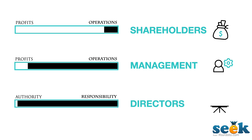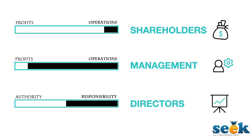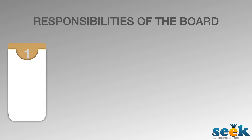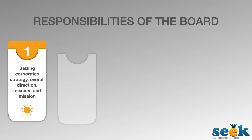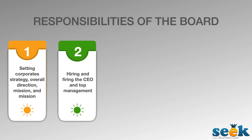Directors have the authority to establish corporate policies and ensure the implementation of the same responsibly. The board can advise the strategic options to the management by which they can delineate the company's mission. They are also responsible for hiring and at the same time firing the top management, including the CEO.